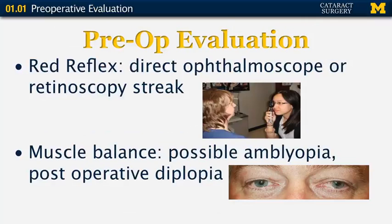The preoperative evaluation can also include looking at the red reflex, which can be done either with the direct ophthalmoscope or with a retinoscopy streak. This is vital if you have a patient where the vision is quite poor but the cataract on slit lamp examination doesn't look that bad. The direct ophthalmoscope or the retinoscopy streak with the red reflex can give you an idea of whether the cataract is significant.